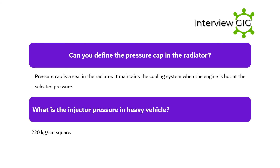Can you define the pressure cap in the radiator? A pressure cap is a seal in the radiator. It maintains the cooling system when the engine is hot at the selected pressure. What is the injector pressure in a heavy vehicle? It is 220 kilograms per centimeter square.